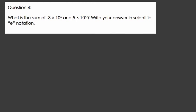Alright, let's read this problem together. It says, what is the sum? Okay, let's pause there for a moment. I see the word sum, so we're going to add numbers here. Negative 3 times 10 to the 5th, that's our first number. It's a product of negative 3 and 10 to the 5th.